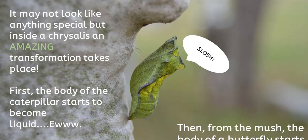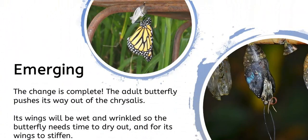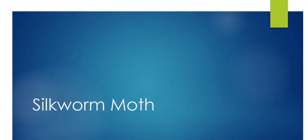Inside the chrysalis, an amazing transformation takes place. Something really gross that happens is that the caterpillar actually becomes liquid. Then after they are mushy, the body of a butterfly starts to develop. So inside the chrysalis is actually liquid and mush and really quite gross. But then we have a beautiful butterfly that emerges. After some time, the butterfly will emerge and come out of the chrysalis. Its wings are wet and a bit wrinkled, so the butterfly needs to dry out and for the wings to stiffen, and then it's ready to fly away.